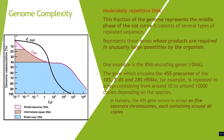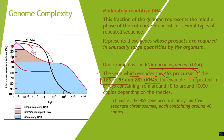Another category in Cot analysis is moderately repetitive DNA. This is the fraction of the genome that represents the middle part of the Cot analysis curve. It represents those genes whose products are required in unusually large quantities by the organism. A classical example in humans is the RNA-encoding gene that codes for the 45S precursor, which is responsible for three different rRNA copies that make up ribosomes: 18S, 5.8S, and 28S ribosomal RNA. In humans, this is repeated around 100 to 10,000 copies, so these sequences can reassociate more quickly than unique sequence DNA.